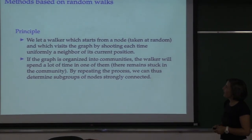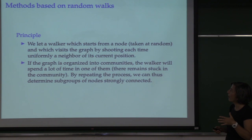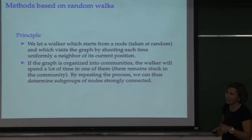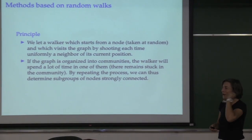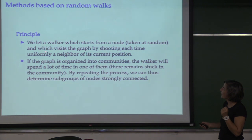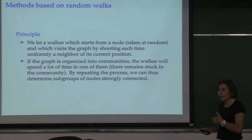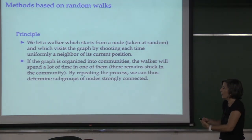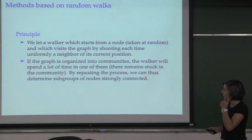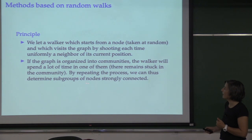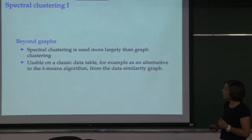For methods based on random walks: a walker starts from a node taken at random and visits the graph by drawing uniformly at random a neighbor of the current position. If the graph is organized into communities, the walker will spend a lot of time in the community and remain stuck there for a while before going out to visit another community. By looking at the nodes visited and the time spent in each, and by repeating the process, you determine the subgroups of nodes that are strongly connected.